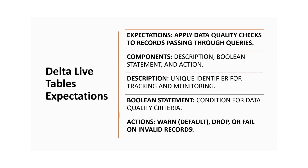The next topic is Delta Live Tables expectations. Expectations are a very crucial feature of Delta Live Tables — they allow you to apply data quality checks to your records. Each expectation has a description for tracking, a condition to evaluate the data quality, and an action to take when issues are detected. There are three components of an expectation: a boolean statement, an action, and a description.